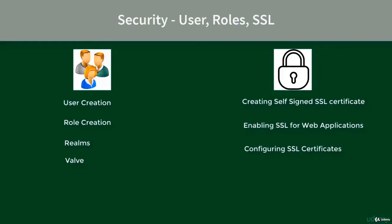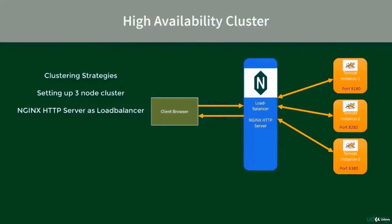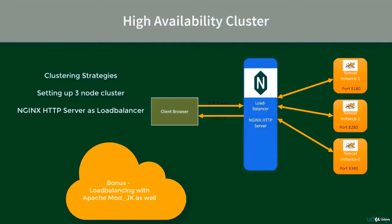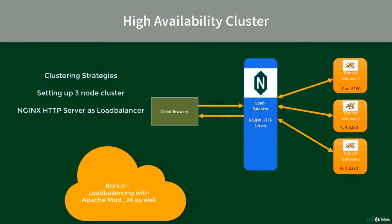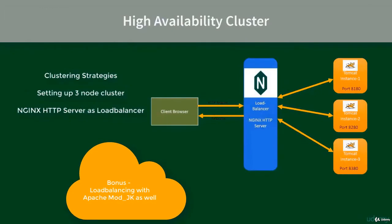Further we talk about scaling Tomcat, and in that process we talk about high availability. We also see how to achieve high availability by setting up a cluster, and we set up a load balancer using Apache HTTP server and Nginx as well for high scale traffic distribution in the cluster.